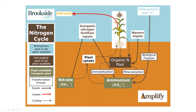Before we had inorganic inputs and the Haber-Bosch process, we relied a lot more on biological fixation. Certain bacteria can fix nitrogen — when we say fix nitrogen, we mean breaking the N2 bond and putting it into a form the plant can use. There are bacteria that make symbiotic relationships, forming nodules on roots. What they're doing is the plant gives them carbon to survive, and in exchange they do the work to break that bond and make plant-available nitrogen.